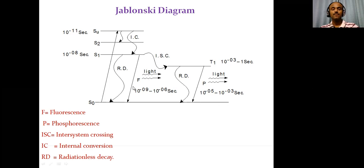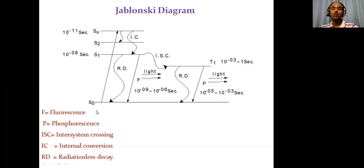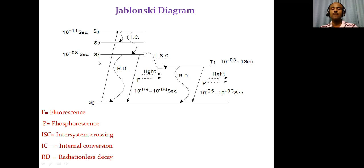The Jablonski diagram consists of different energy levels shown by S0, S1, S2, etc. These are the singlet energy levels, and T1 is called the triplet energy level. Initially the electron is present in the ground state denoted by S0. Upon absorbing radiation, this electron is excited from ground state to S1, then to S2 excited state. This is called excitation of the electron by absorbing energy.